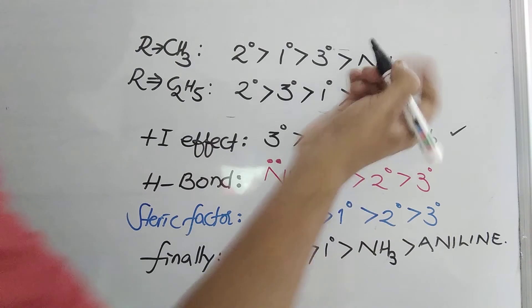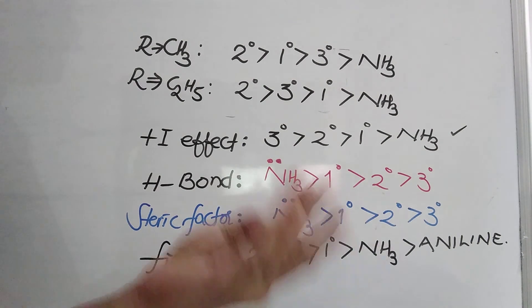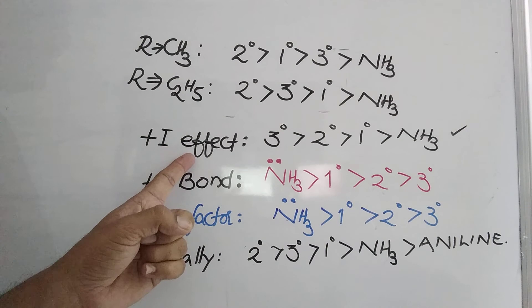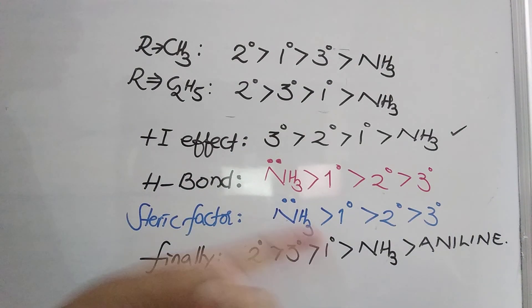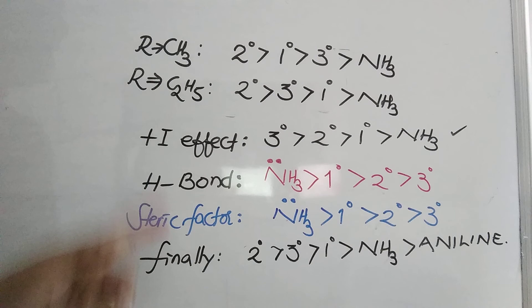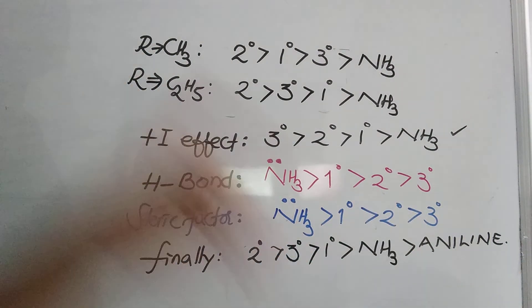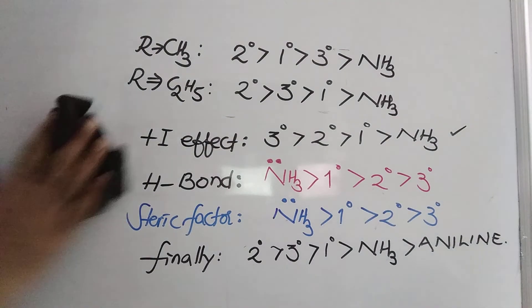To summarize for exam purposes: in the gaseous state, tertiary > secondary > primary > ammonia. In aqueous solutions according to inductive effect, tertiary is best; according to hydrogen bonding, ammonia is best; according to steric factor, ammonia is best. Overall in aqueous solution: secondary > tertiary > primary > ammonia. If the alkyl group is methyl, secondary > primary > tertiary > ammonia; if ethyl or higher, secondary > tertiary > primary > ammonia.